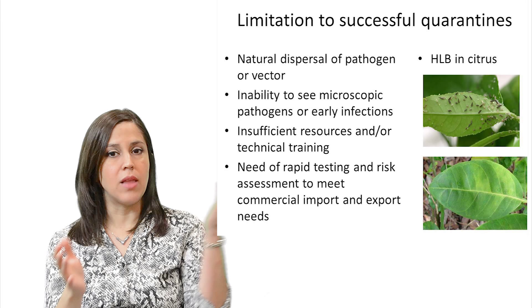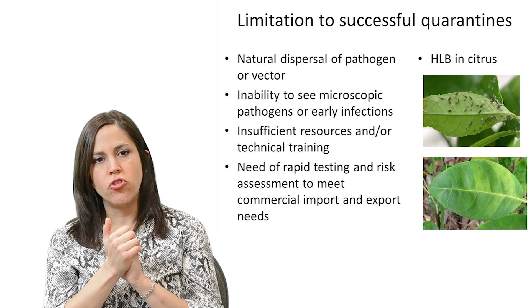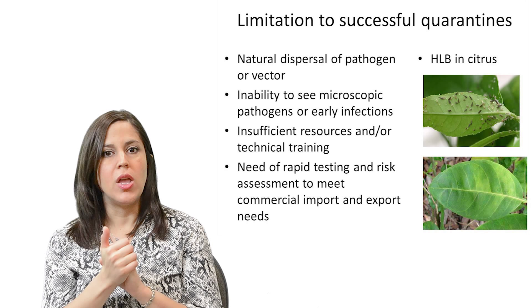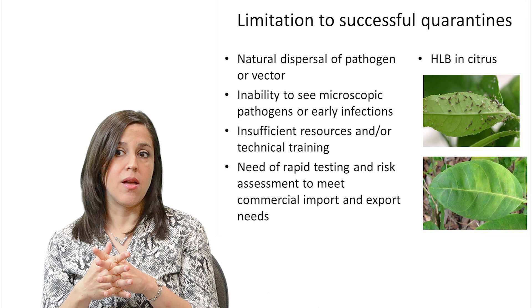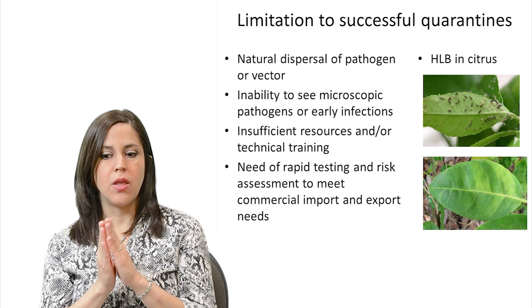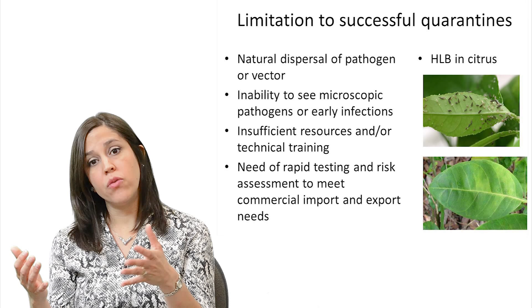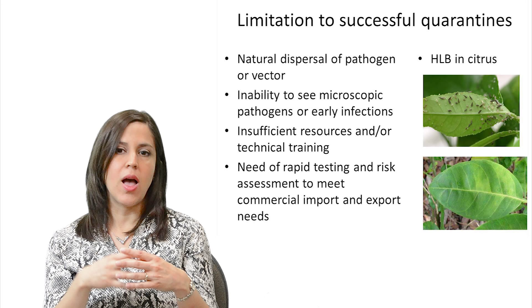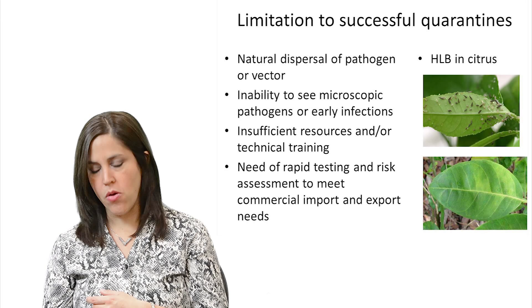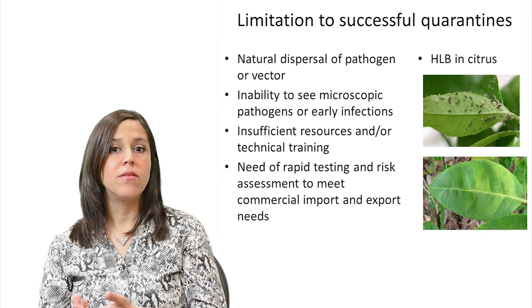The upper picture shows psyllids reproducing, and it's really hard to control some of these vectors. For commercial groves there is a strict psyllid control management program to avoid disease spread within groves and to other regions. However, in residential areas where homeowners have citrus trees in their yards, they are not controlling for psyllids, so it's very easy to spread the disease through the natural movement of these insect vectors.